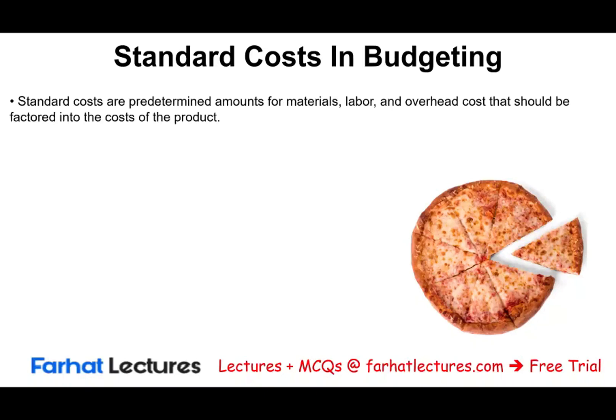What are standard costs? Those are predetermined amounts — predetermined means we computed them beforehand — predetermined amounts of material, labor, and overhead costs that should be factored into the cost of the product.